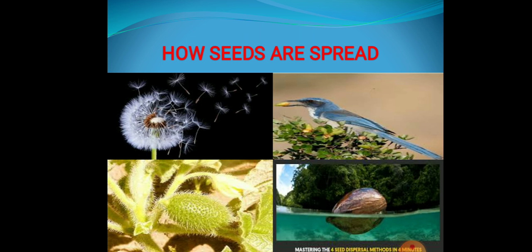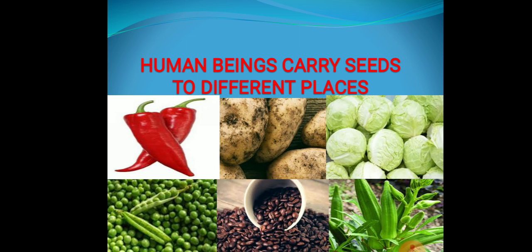So children, the different ways by which seeds are spread and dispersed are by flying, by sticking to animal fur, by birds, by water. But one thing remaining — what about human beings? They are also helping in the dispersal of seeds. Human beings carry seeds to different places. We bring seeds of plants that we find beautiful or useful to grow them in our garden, and later we give them to friends and relatives, and in this way plants spread to other places.